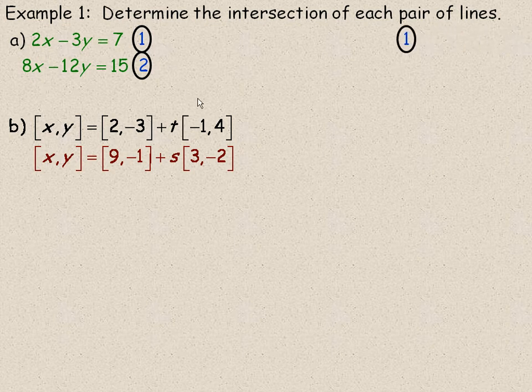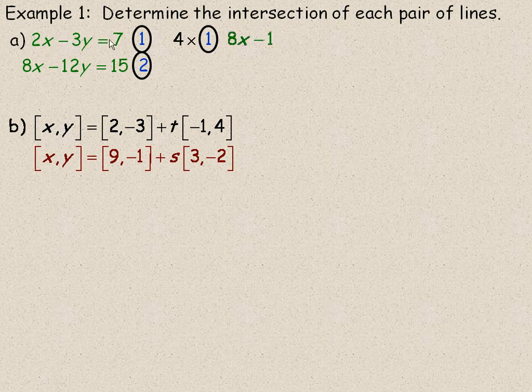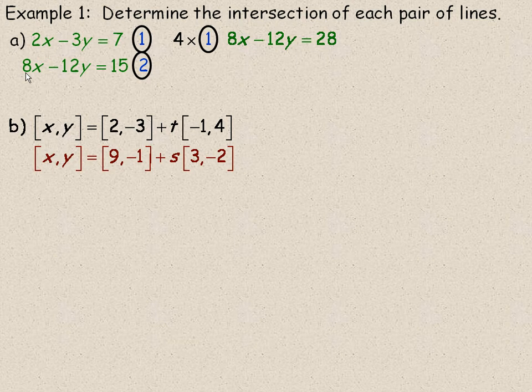So this is what I'm going to write. I'm going to take equation number 1 and multiply it by 4, and so the entire equation gets multiplied by 4. 4 times 2x is 8x, 4 times negative 3y is negative 12y, and 4 times 7 is 28. The second equation starts with an 8x, so I don't have to multiply by anything.